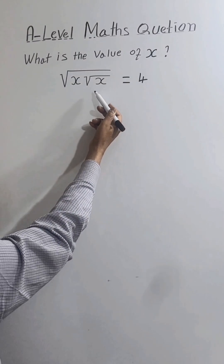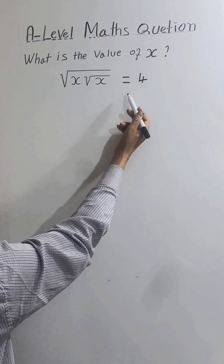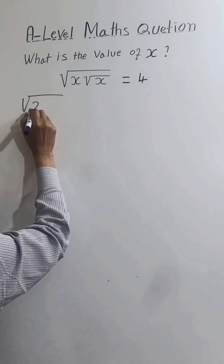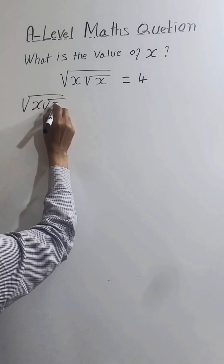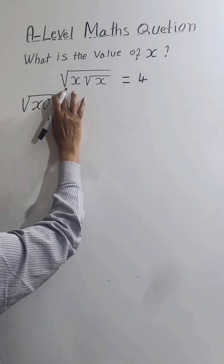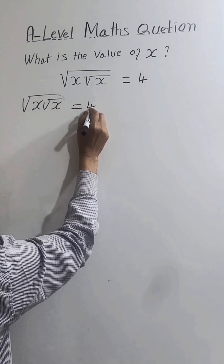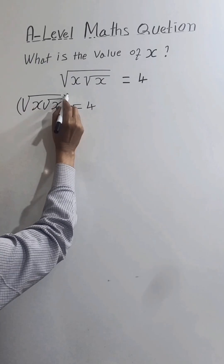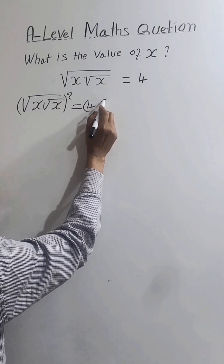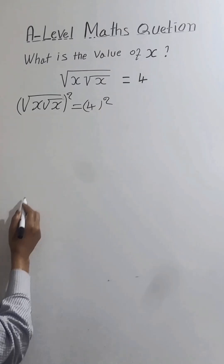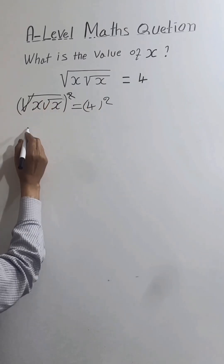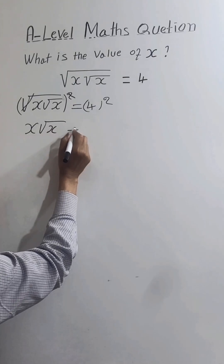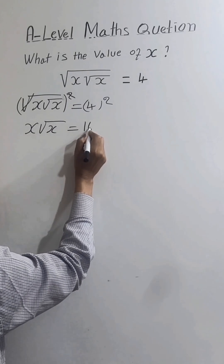The square root of x times the square root of x equals 4. So let's square both sides. This will be cancelled, leaving us with x times the square root of x equals 16, since 4 squared is 16.